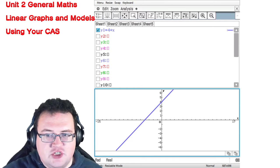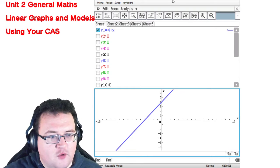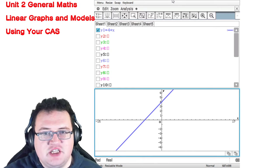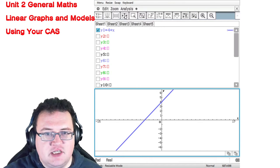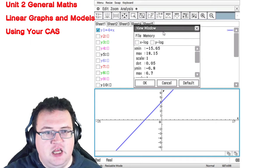Sometimes you're going to be asked to draw a graph for a given window for a series of values. What you do there is you press this button here with the four arrows and you bring up this thing here called the view window.